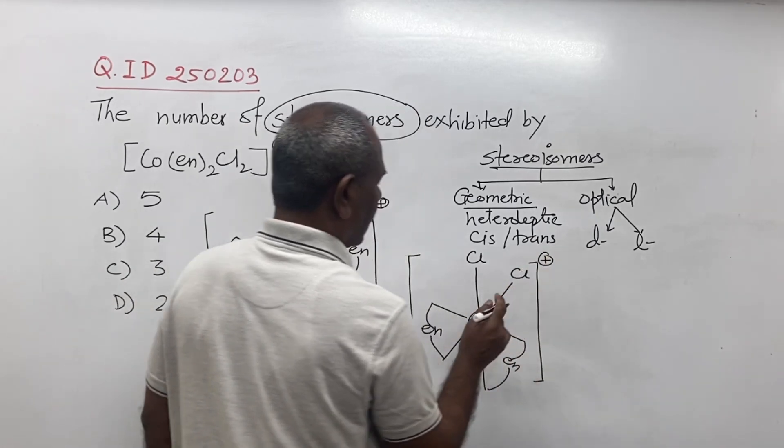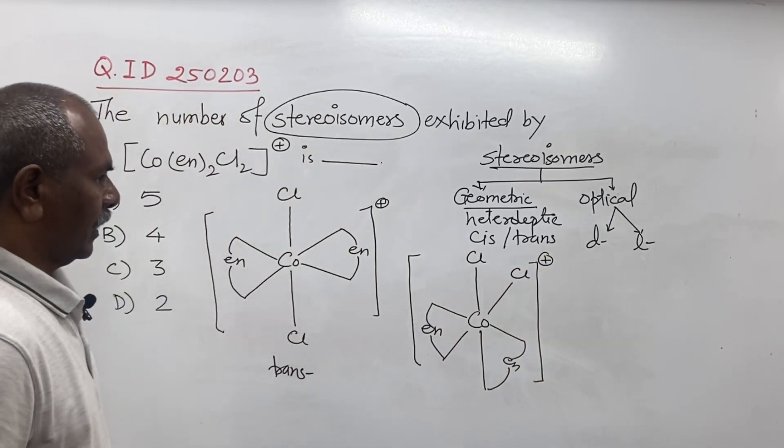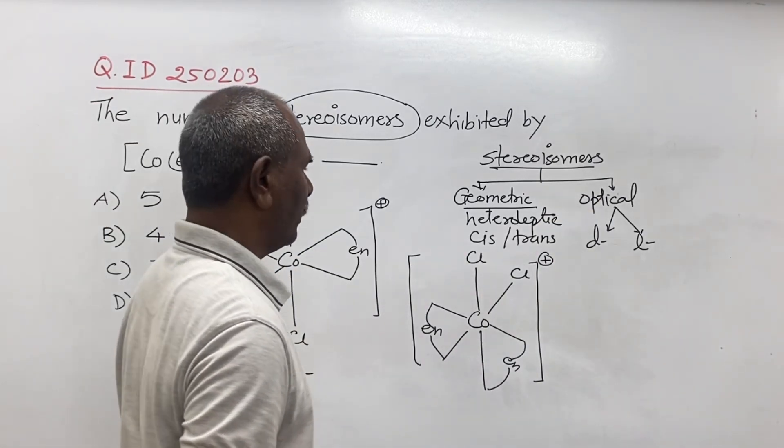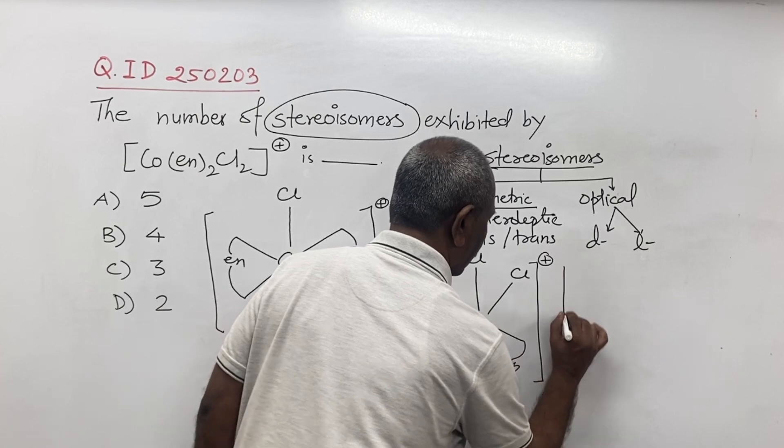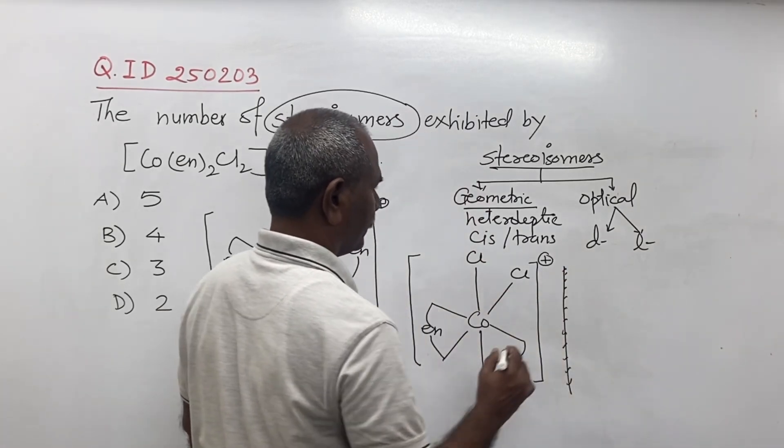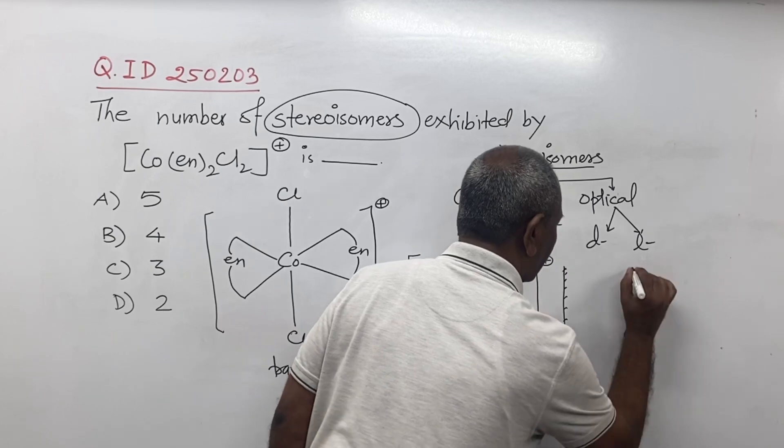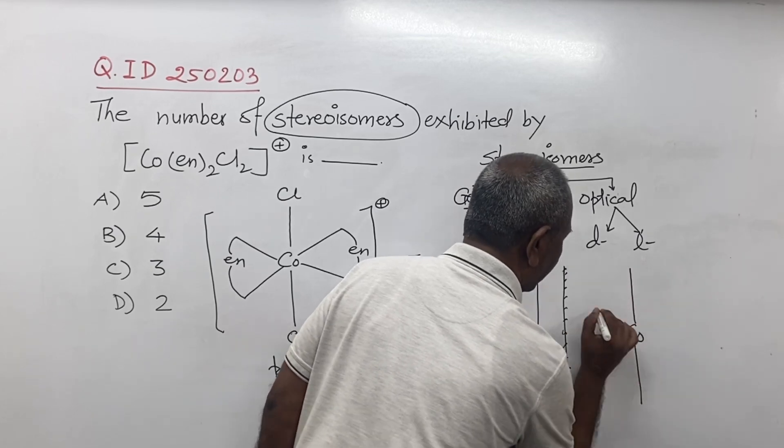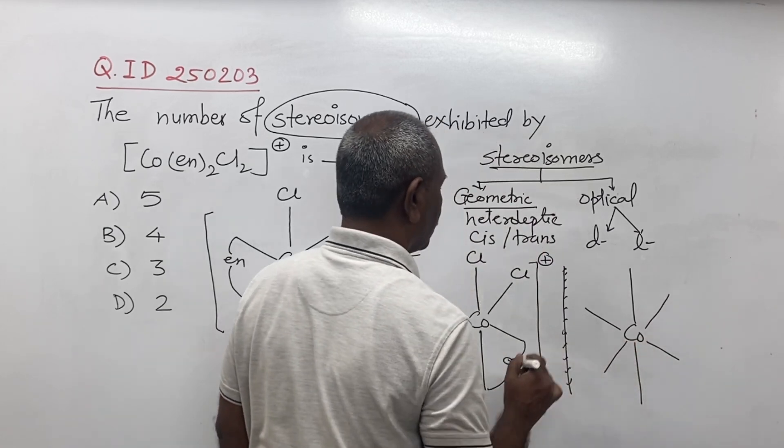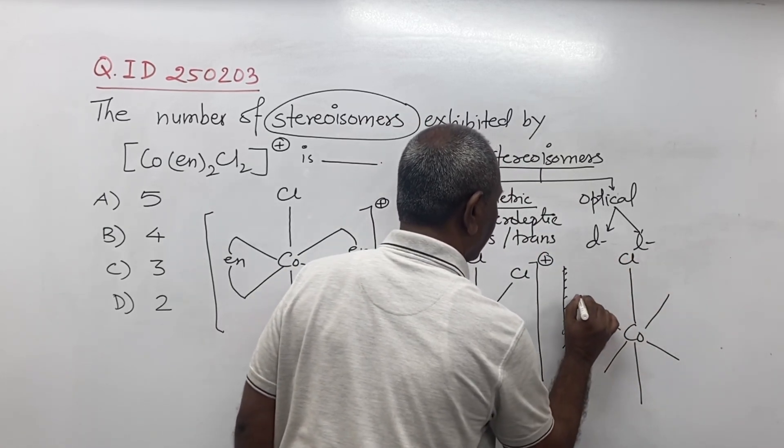Now this can exhibit optical isomerism. So suppose this is a mirror, you can draw its mirror image which is not superimposable. Cl, Cl, Cl.